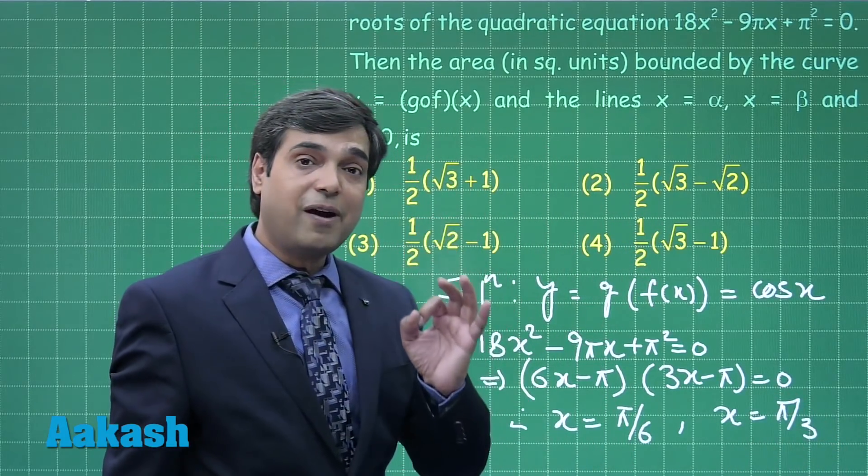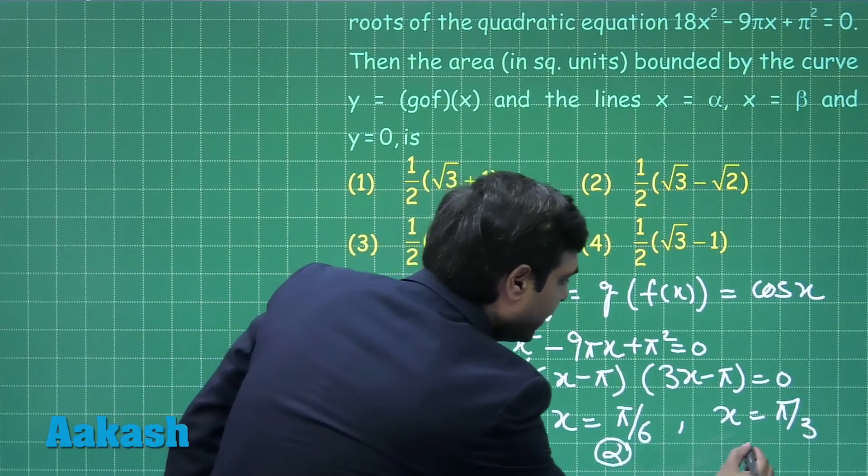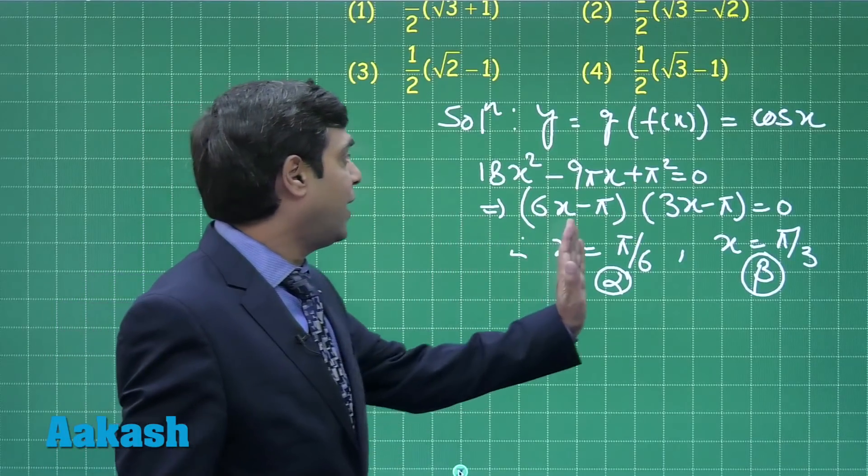Hence, the roots are x equals pi by 6 and x equals pi by 3. It is given alpha is less than beta. Clearly, this is alpha and this is beta. We got alpha and beta.